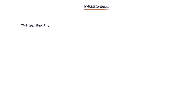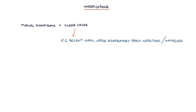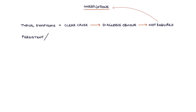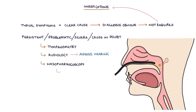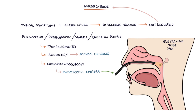Let's talk about investigations. Often, eustachian tube dysfunction gives a typical set of symptoms and is associated with a clear cause — for example, a recent viral upper respiratory tract infection or hay fever. In this situation, the diagnosis can be obvious and investigations are not required, as the symptoms will resolve with time or simple treatments. With persistent, problematic, or severe symptoms, or where the cause is in doubt, investigations can be helpful. These include tympanometry, audiometry to assess hearing in detail, nasopharyngoscopy — where an endoscopic camera is put through the nose to the throat to inspect the eustachian tube openings — or a CT scan to assess for structural pathology.